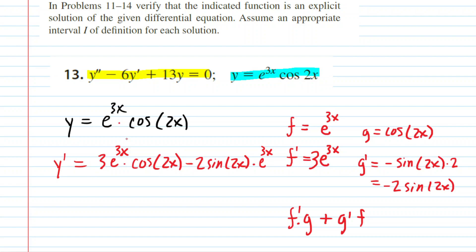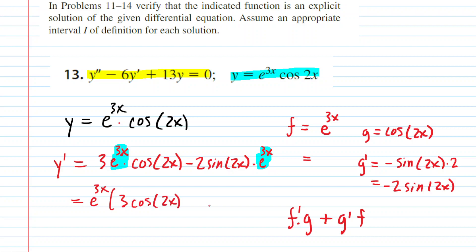Before computing the second derivative, we can clean up the first derivative. Looking carefully, we have a common factor of e to the 3x, so we factor that out. The first derivative becomes e to the 3x times the quantity 3 cosine of 2x minus 2 sine of 2x. That is the final form for y prime.